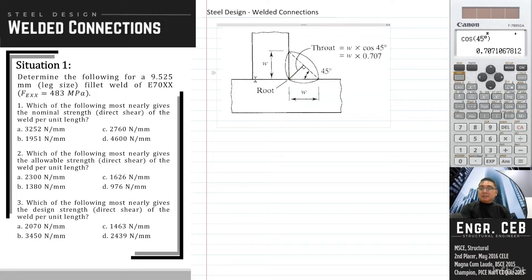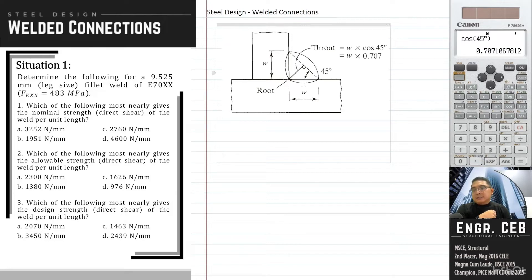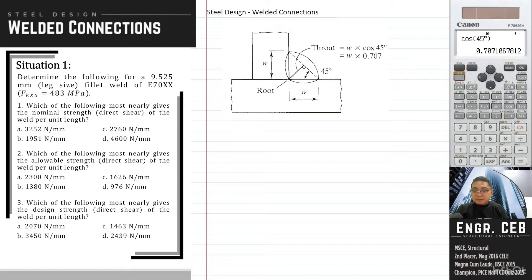First, let us discuss the cross-section of the weld. W indicates the leg size of the weld. The standard fillet weld is an isosceles right triangle. If we compute this segment, that is simply W cosine 45 degrees, or using this angle — since this is an isosceles triangle, this angle is also 45 degrees — so it's either sine or cosine, and we obtain the same result, simplified to 0.707.